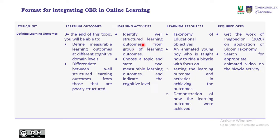So what are the activities that the students will be exposed to in order to meet these learning outcomes? They will identify well-structured learning outcomes from a group of learning outcomes. You will give them activities to choose a topic and state measurable learning outcomes while indicating their cognitive level. These are the activities they are going to do. What resources will they require to do these activities and meet the learning outcomes? First, you want to expose them to taxonomy of learning objectives. Secondly, you want an animated video of a young boy being taught to ride a bicycle, with focus on setting the learning outcome and activities.